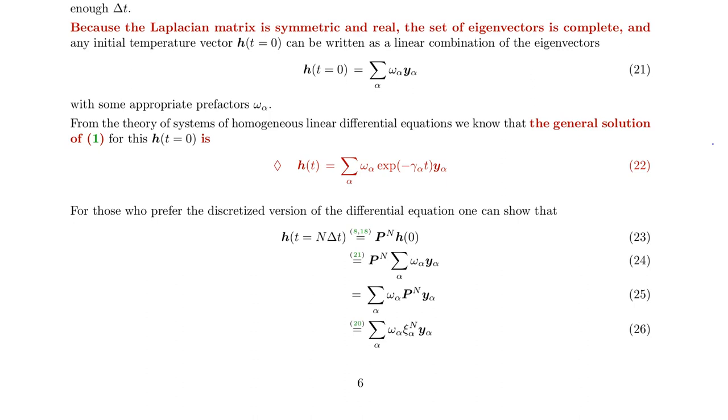But if we have a connected graph, then the second eigenvector actually is of interest to us, because that survives longest. That's the eigenvector with sort of the smallest eigenvalue, which is not zero.